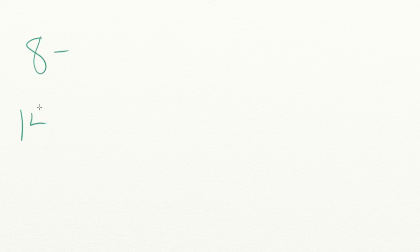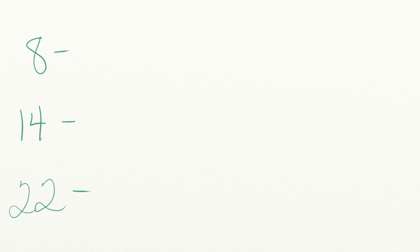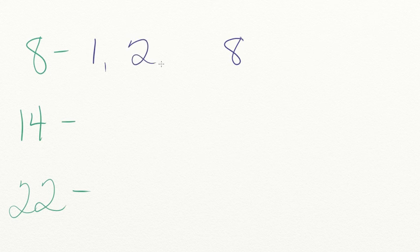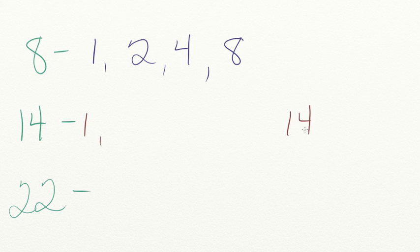Let's walk through a practice problem together. Can you find the greatest common factor of 8, 14, and 22? Our first step is to find the factors for each number and list them in order from least to greatest. For the number 8: we can multiply 1 times 8, and 2 times 4. For the number 14: we can multiply 1 times 14, and 2 times 7.